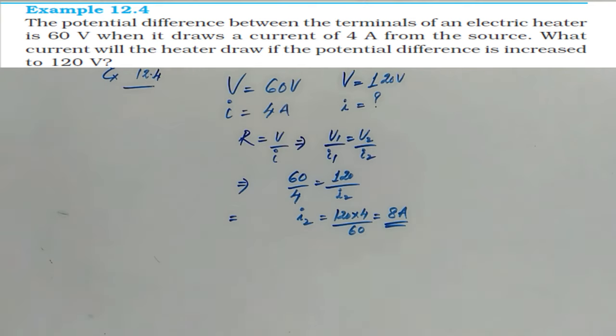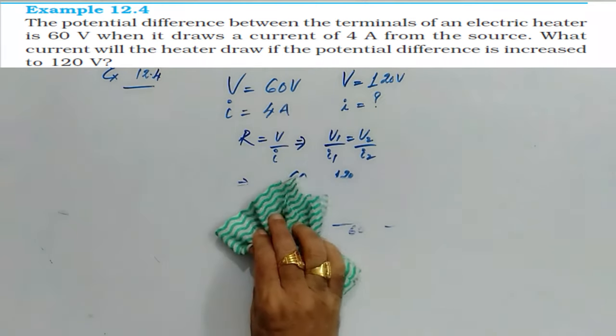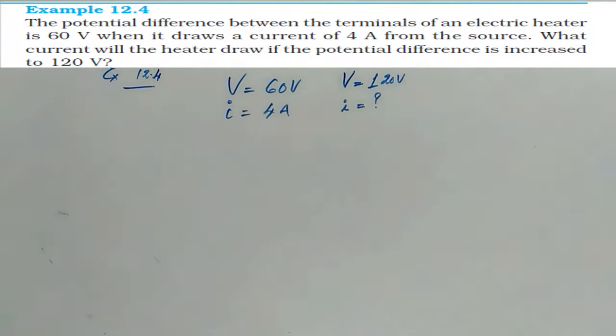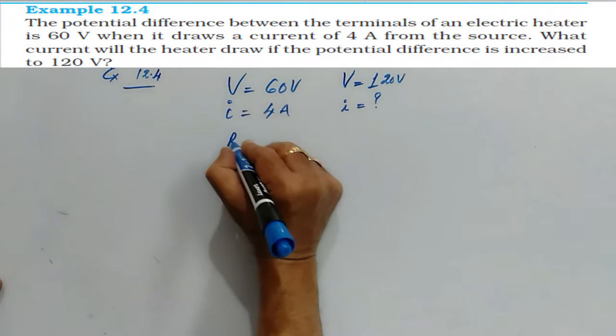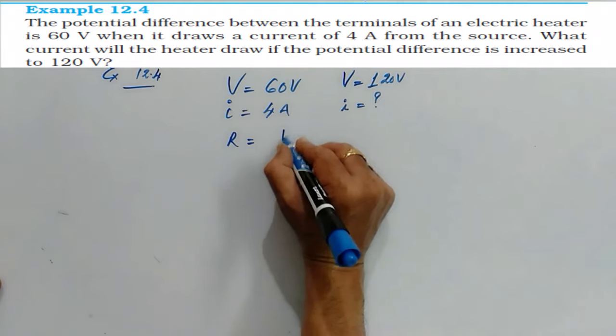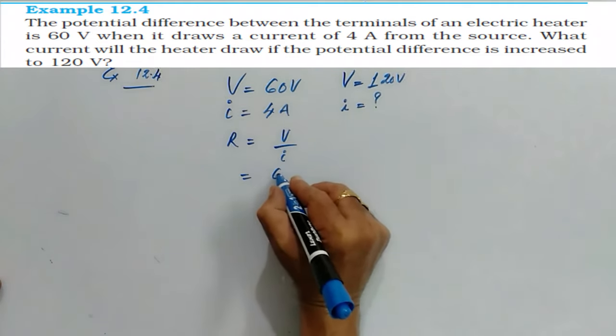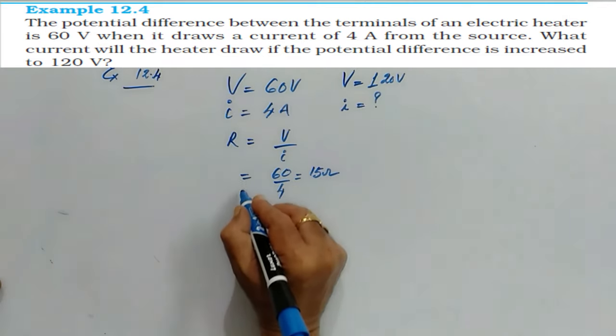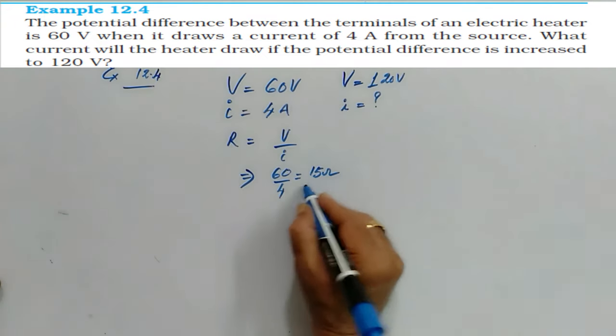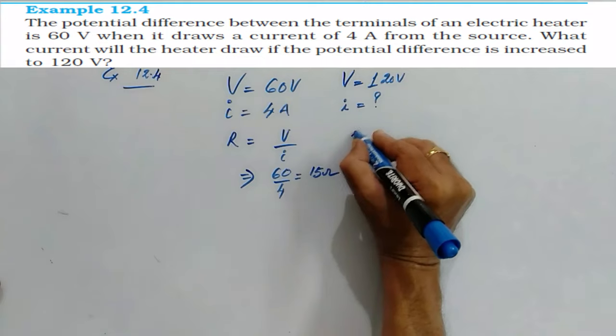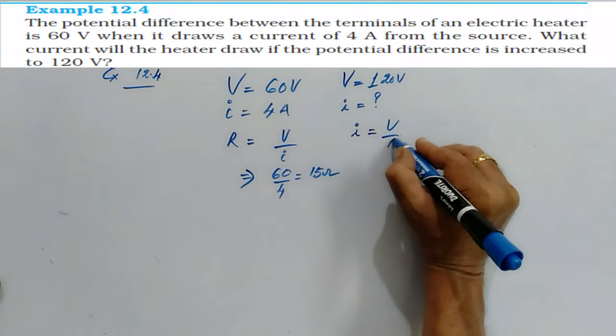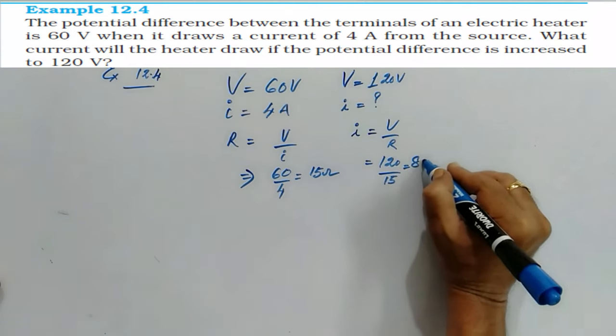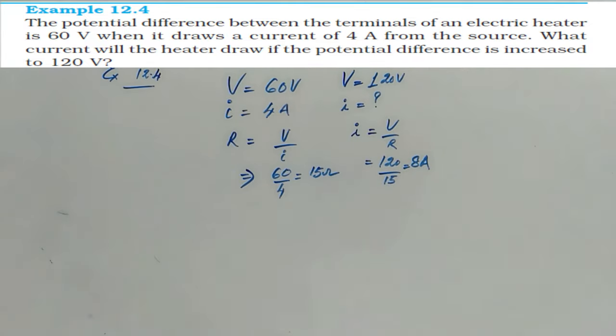The same problem can be done first by finding the resistance and then by applying Ohm's law. What is the resistance from the given data? Resistance is equal to V by I, so 60 by 4 which gives us 15 ohms resistance. The value of resistance is 15 ohms. Now, I is equal to V by R: 120 divided by 15, which gives you 8 amperes. Either way you can do it.